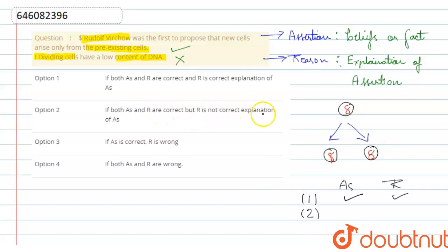No, because reason is not correct. So, they are saying assertion is correct and reason is not correct. Still, it is not justifying the question.